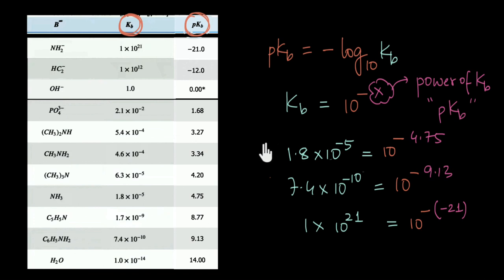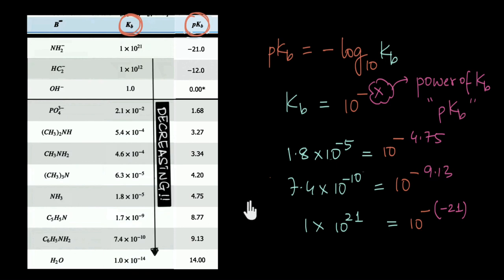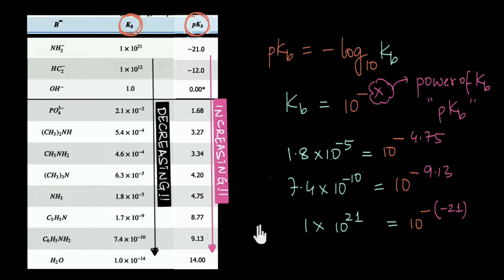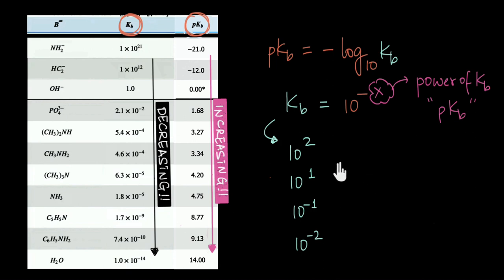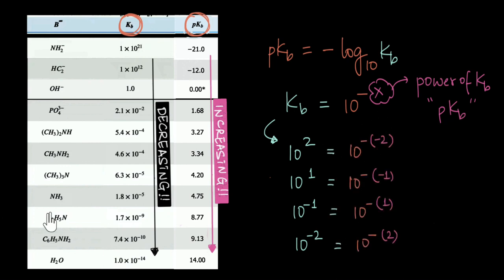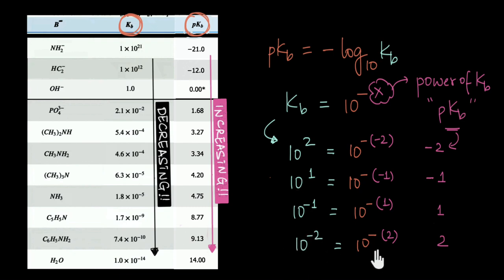One important thing to note: as we go from amide to water, the KB values keep decreasing from 10²¹ down to 10⁻¹⁴. But looking at PKB, the values go from −21 up to +14, so PKB values are in fact increasing. This makes sense because, writing in the form 10^(−x): for 10² the PKB is −2, for 10⁻¹ it is 1, for 10⁻² it is 2. Therefore, lower the value of KB, higher will be the PKB.